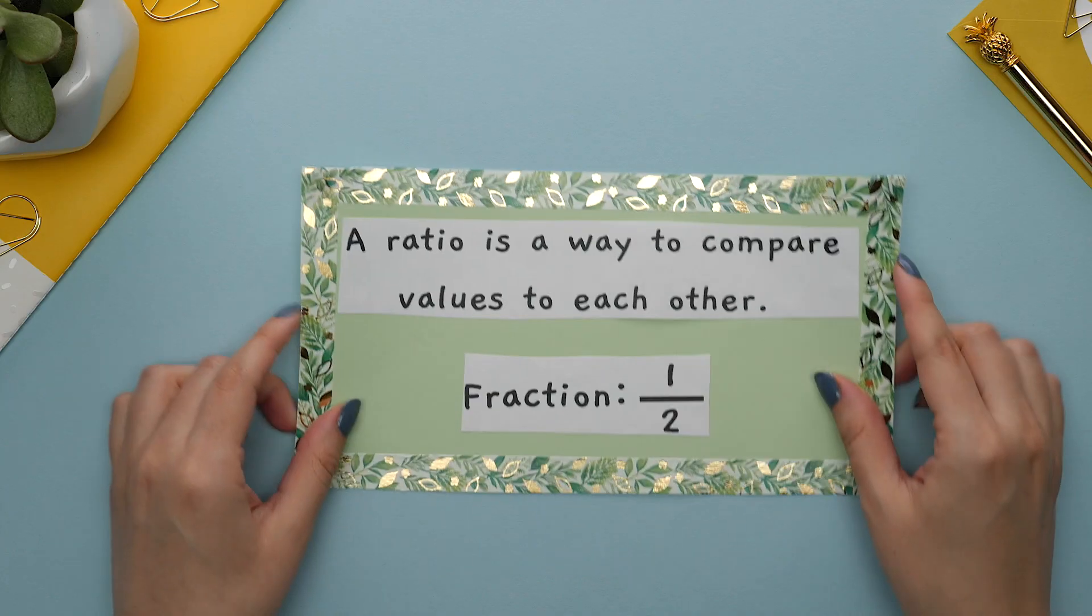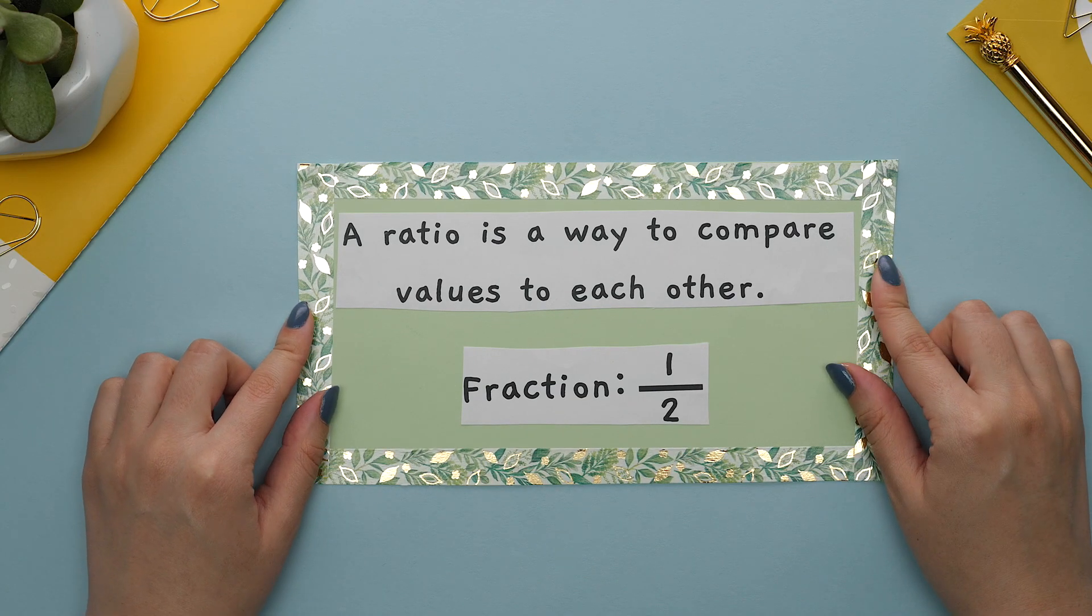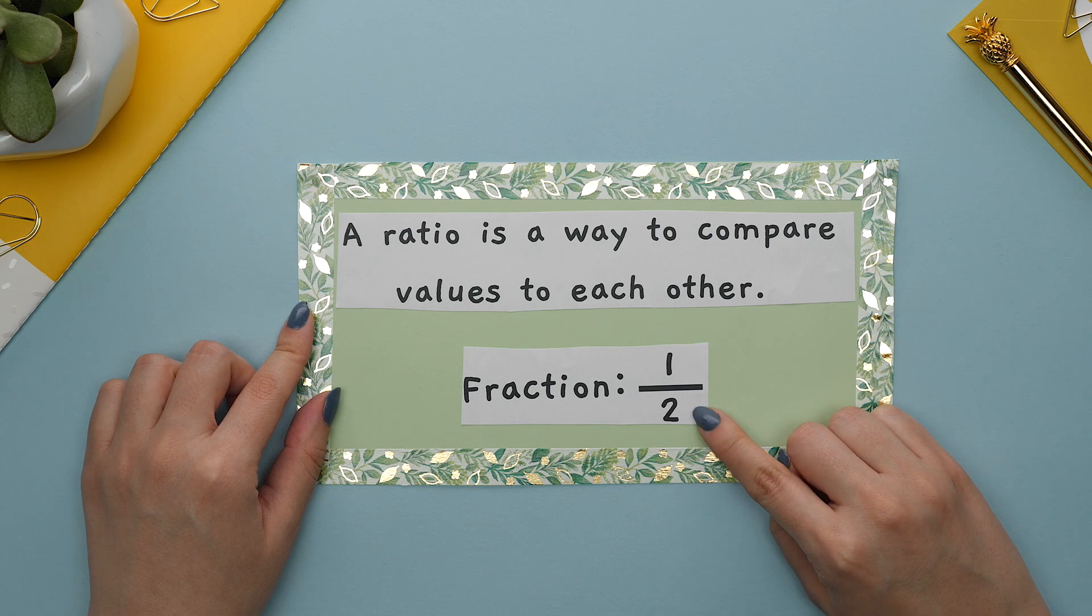Another type of example where you have multiple unknown variables is when you are asked to find the ratio between two different elements or variables. A ratio is a way to compare values to each other. This will typically be shown as a fraction.